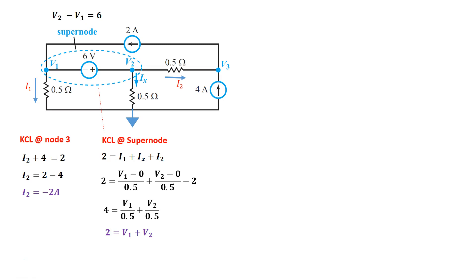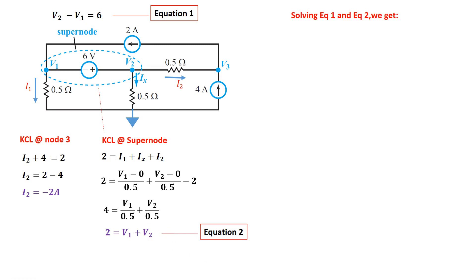Now I have two equations: equation 1 is V1 plus V2 equals 2, and equation 2 is V2 minus V1 equals 6. Adding these two equations gives 2·V2 equals 8, so V2 equals 4 volts. Substituting back, 4 minus V1 equals 6, so V1 equals negative 2 volts. Alternatively, V1 equals 2 minus 4, which also gives negative 2 volts.